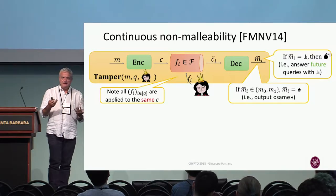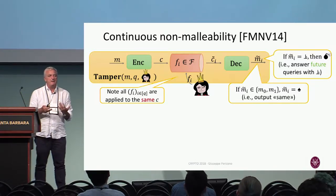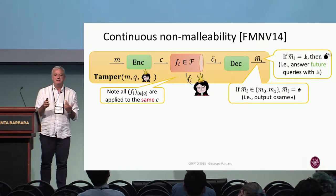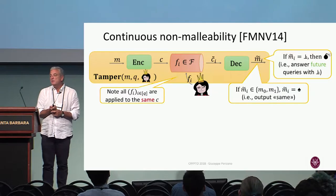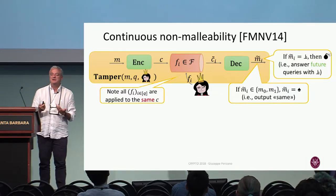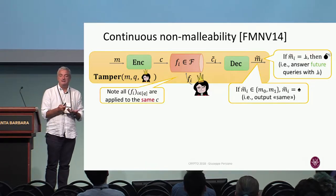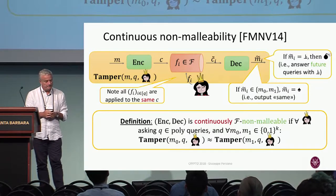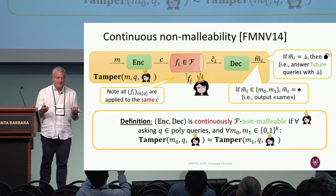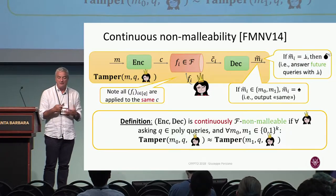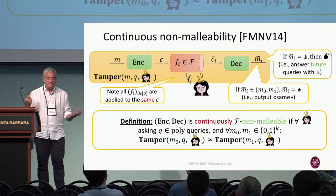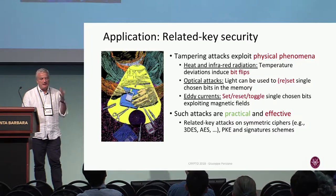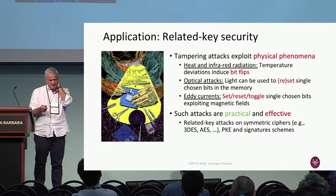Also in the experiment, we have two possible plaintexts M0 and M1, and the adversary tries to guess which one was encoded. If the adversary doesn't do anything, it cannot learn whether that was an encoding of M0 — it just learns that it was an encoding of the same plaintext. This is a game-based definition: the view of the adversary for any polynomial number of tampering queries is the same for any two plaintexts M0 and M1.